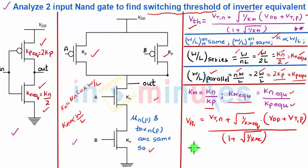Now what is Kr equivalent? Kr equivalent is Kn equivalent upon Kp equivalent that is Kn by 2 into Kp equivalent which is twice into Kp which is Kn by Kp this entire thing is divided by 4.